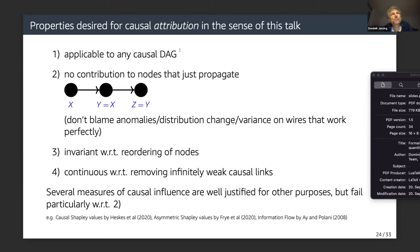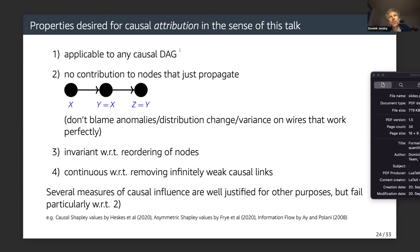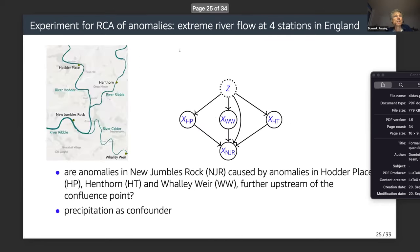To summarize the desired properties for causal attribution: it should be applicable to any causal graph; no contribution to nodes that just propagate; invariant with respect to reordering of nodes; and continuous with respect to removing infinitely weak causal links. That last property is really problematic for quite a few contribution methods in the literature that I have been rejecting for our work, even though they have good justification in their own right.